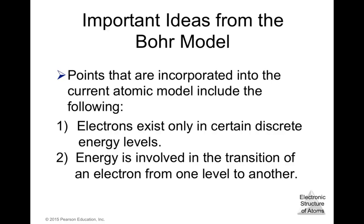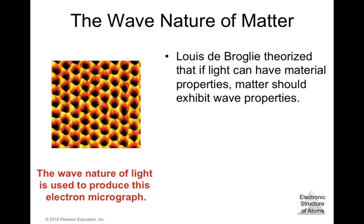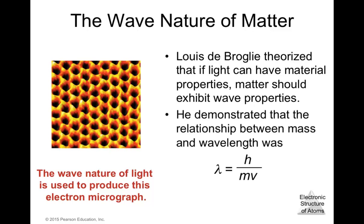Louis de Broglie theorized that if light can have material properties, matter should exhibit wave properties. He demonstrated that the relationship between mass and wavelength is: λ = h / (mv), where h is Planck's constant, m is mass, and v is velocity. This incorporates mass — a property of matter — into the wave equation. The wave nature of electrons is used to produce electron micrographs.